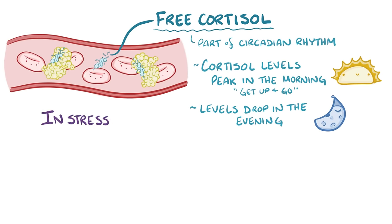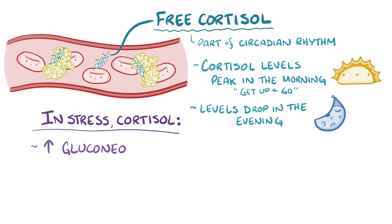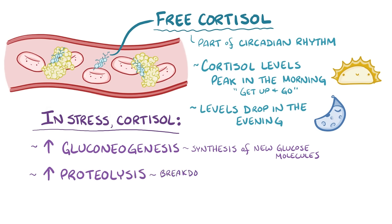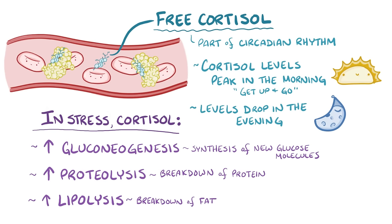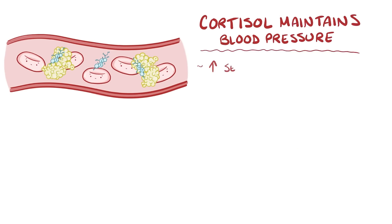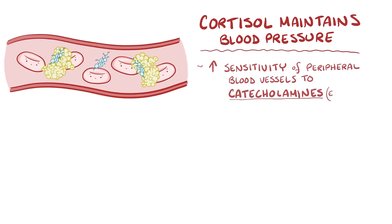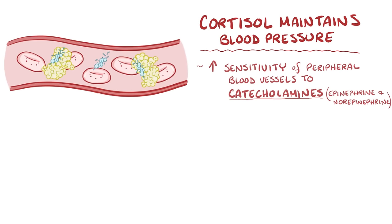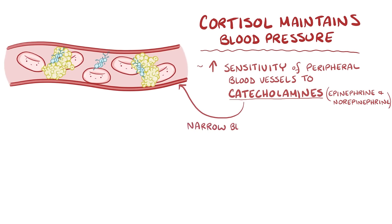In times of stress, the body needs to have plenty of energy substrates around, so cortisol increases gluconeogenesis, which is the synthesis of new glucose molecules, as well as proteolysis, which is the breakdown of protein, and lipolysis, which is the breakdown of fat. Cortisol also helps to maintain blood pressure by increasing the sensitivity of peripheral blood vessels to catecholamines like epinephrine and norepinephrine, which narrows the blood vessel lumen.